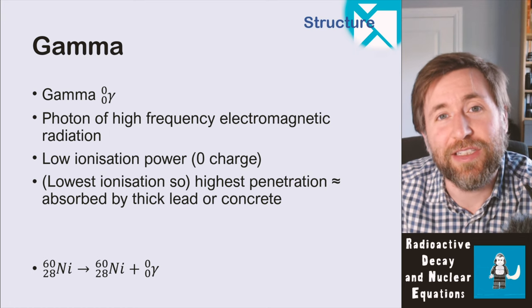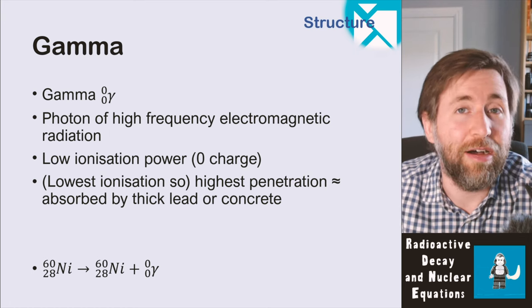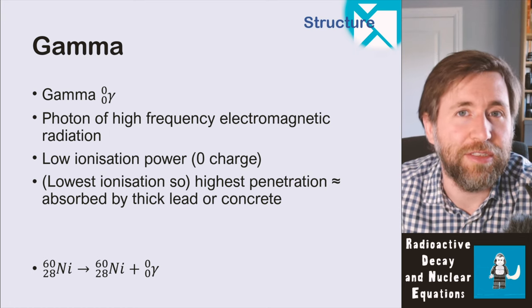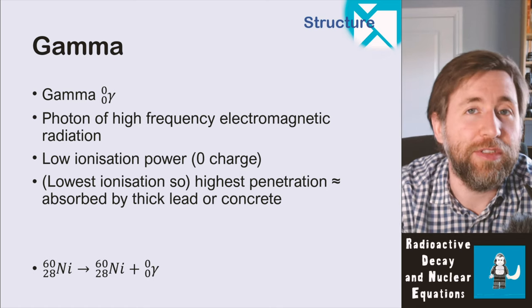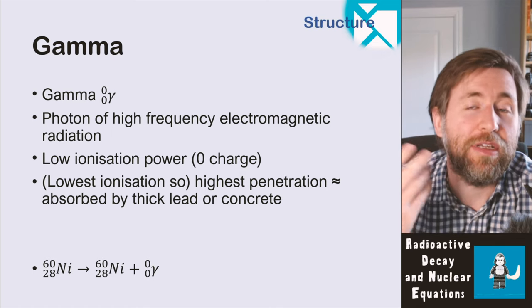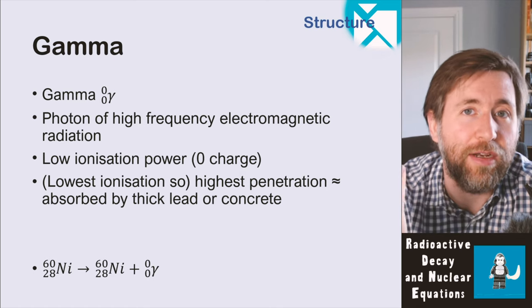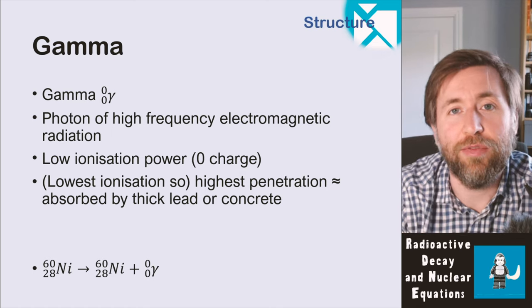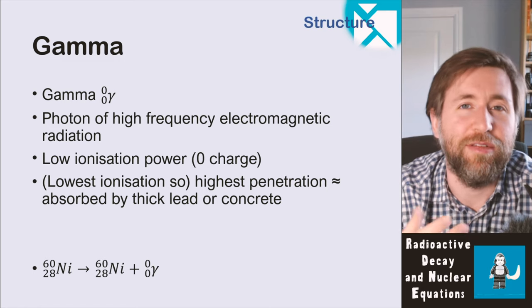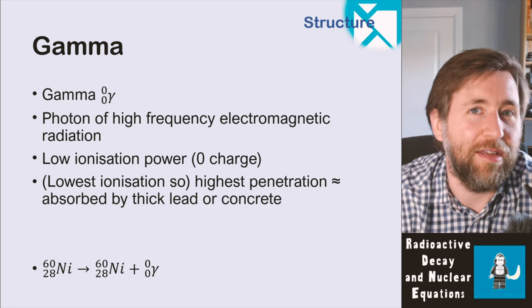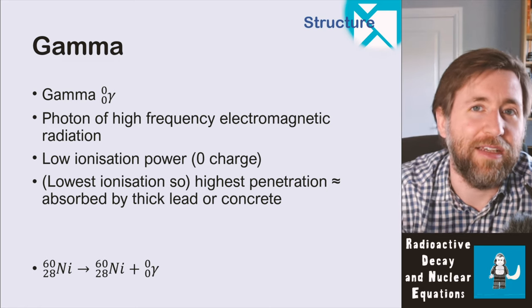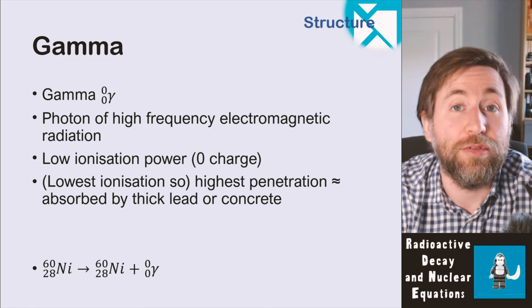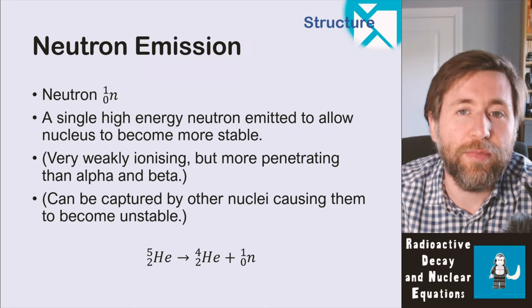Gamma radiation is dangerous in high concentrations. Although one individual gamma photon is unlikely to cause an ionization, if you have many, many of them, you're going to get many ionizations of atoms, and that can kill cells or lead to cancer.